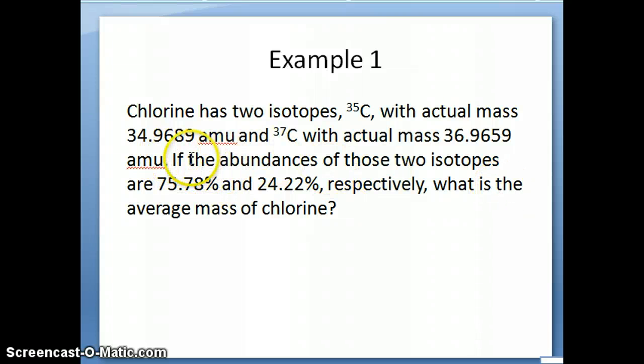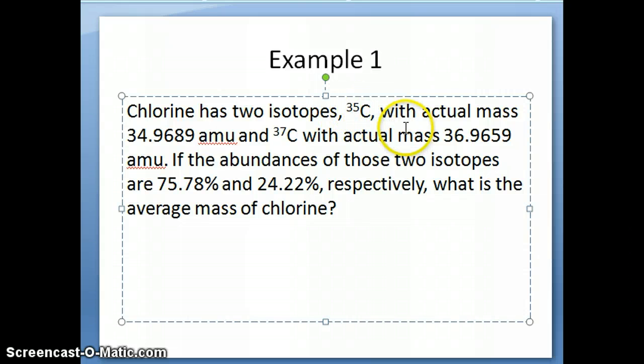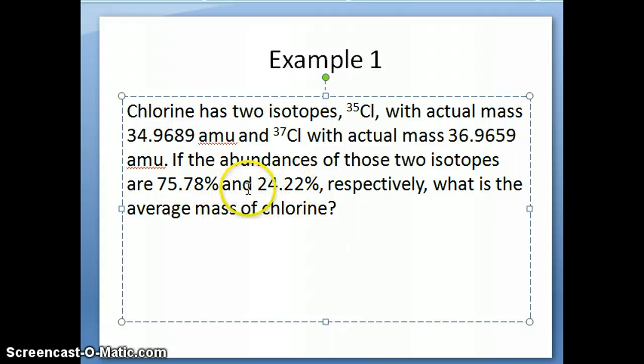Now, if the abundance of these two isotopes is 75.78% for the 35-chlorine isotope, and I should note that here's a typo, this should both of them be chlorine, and then the 37-chlorine isotope has an abundance of 24.22%, what is the average mass of a sample of chlorine atom? So that's what we're going to do a calculation of in the next part.